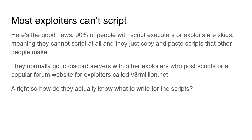Here's the good news: most exploiters can't script. About 90% of people who use script executors are skids — meaning they can't script at all, and they just copy and paste scripts from other people. But here's the problem: the people who actually can script will either write scripts and release them publicly, or write scripts and sell them, and they'll eventually get leaked. The way people find these scripts is through Discord servers for exploiters, or a popular forum website called Vermillion, which is mainly for exploiters on Roblox. You can actually go on there and look up the name of your game.